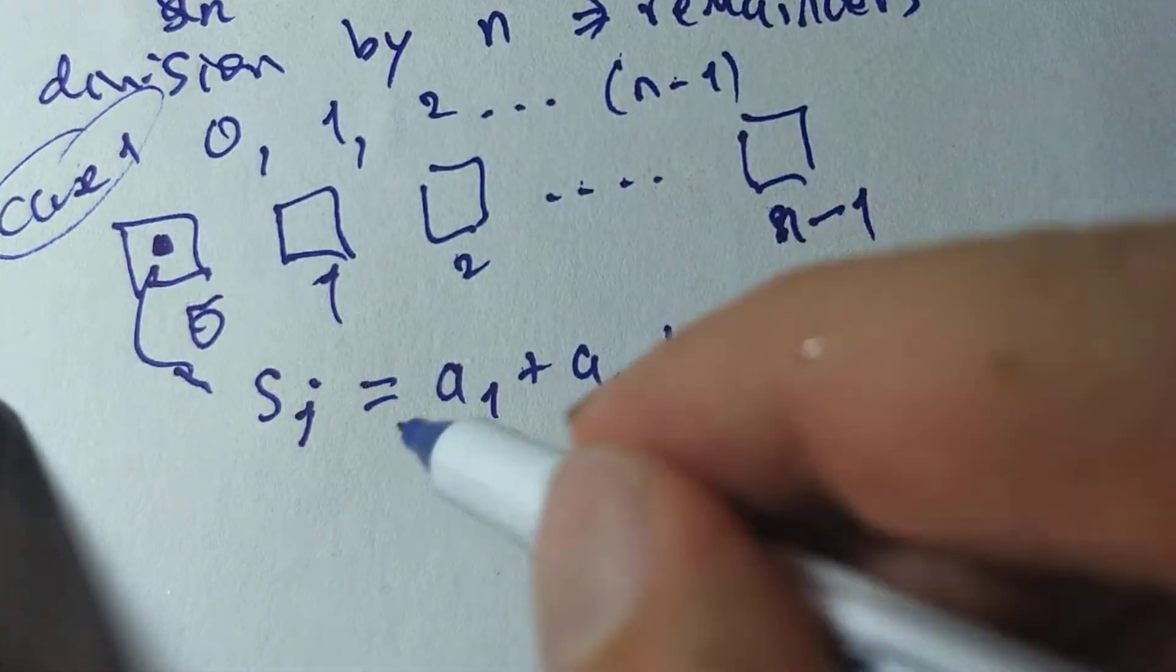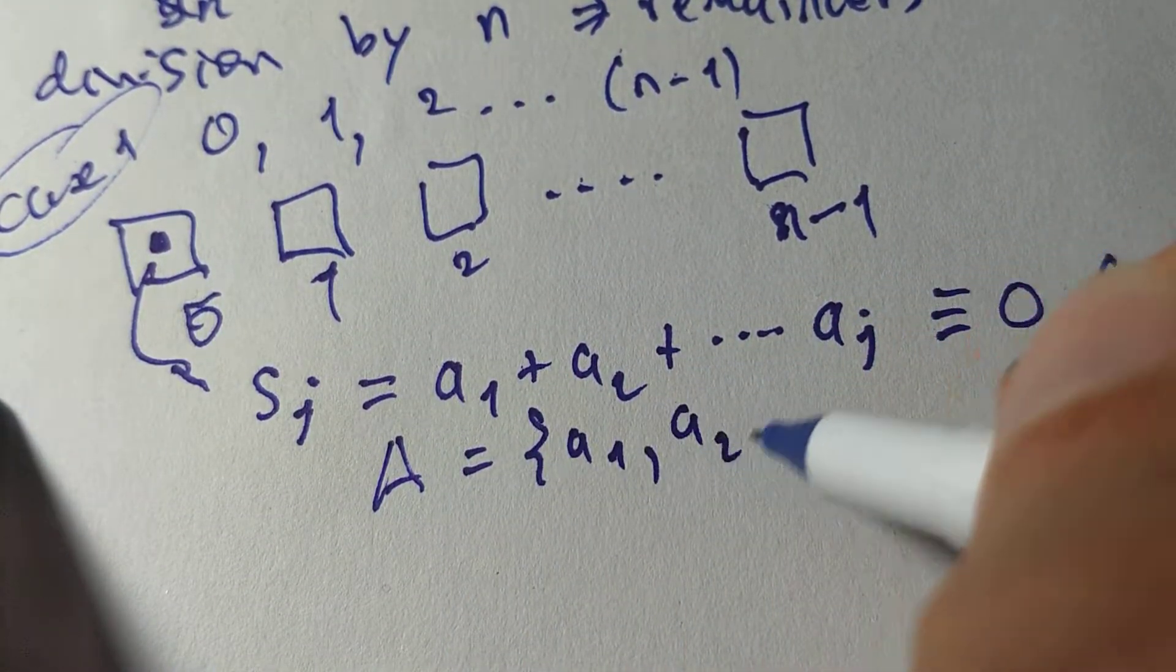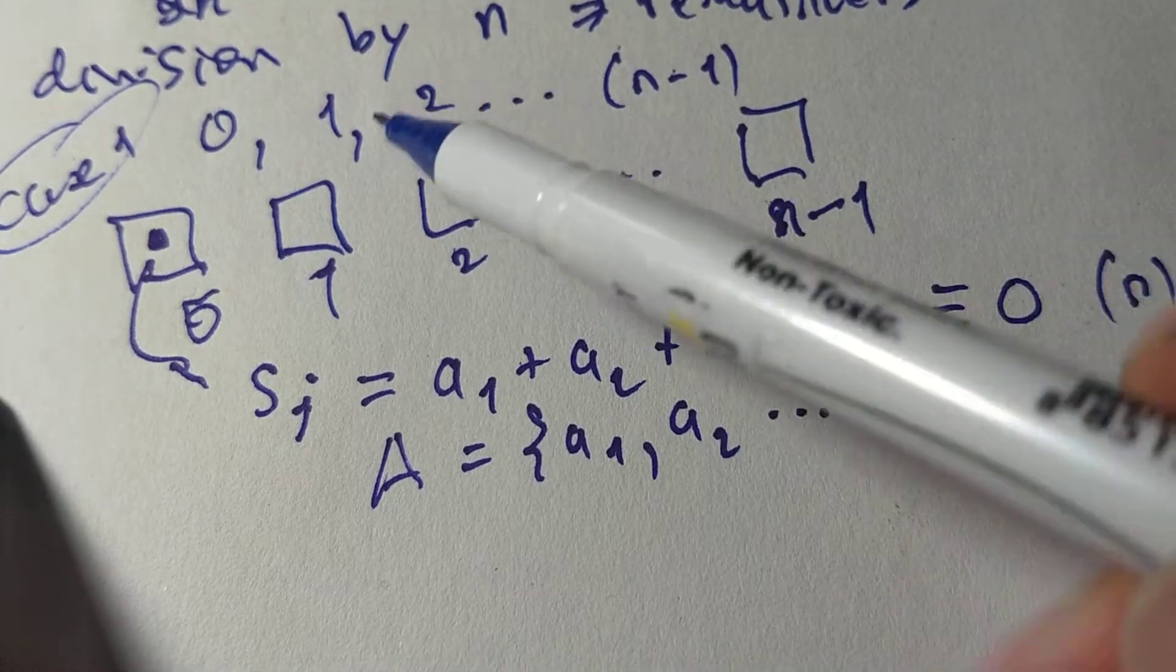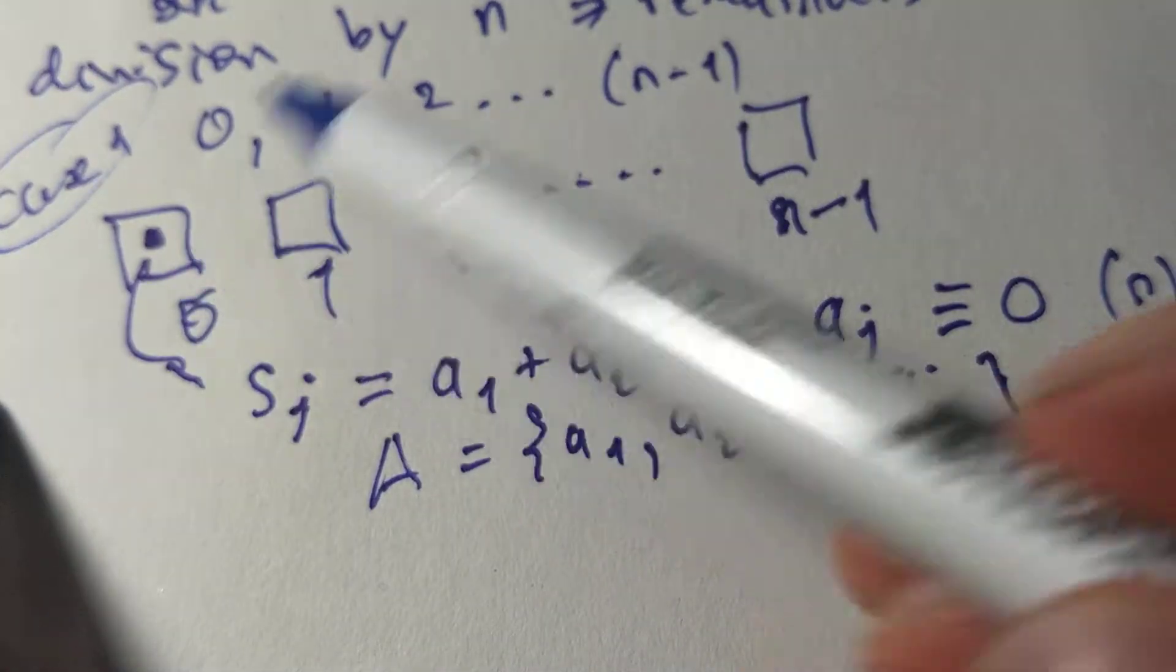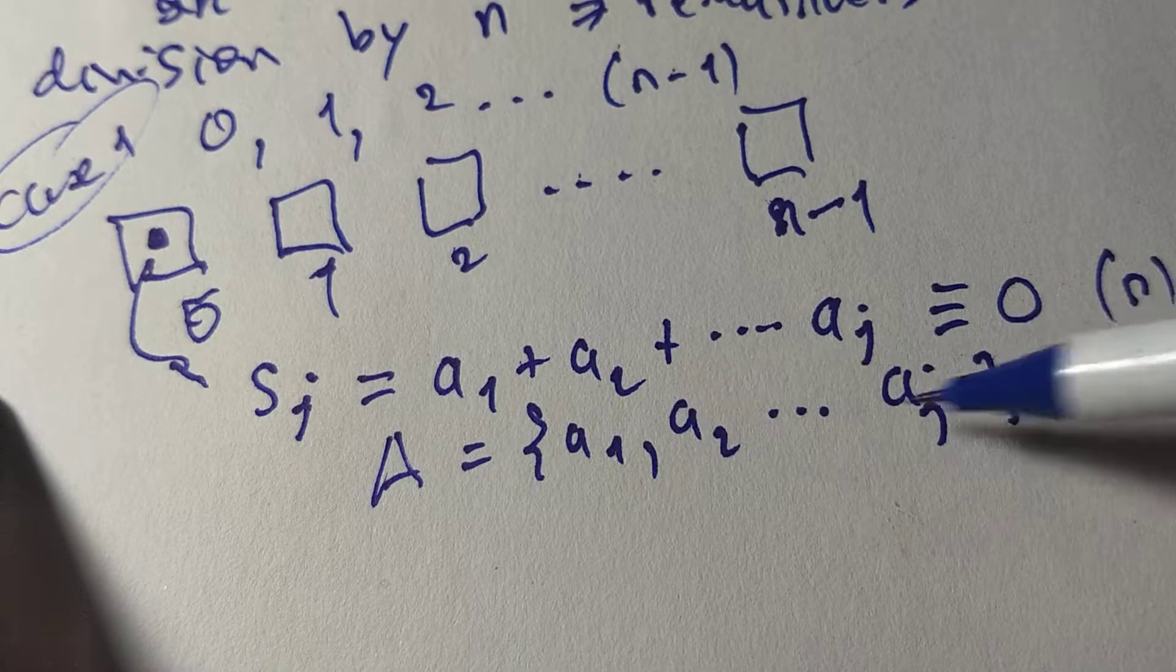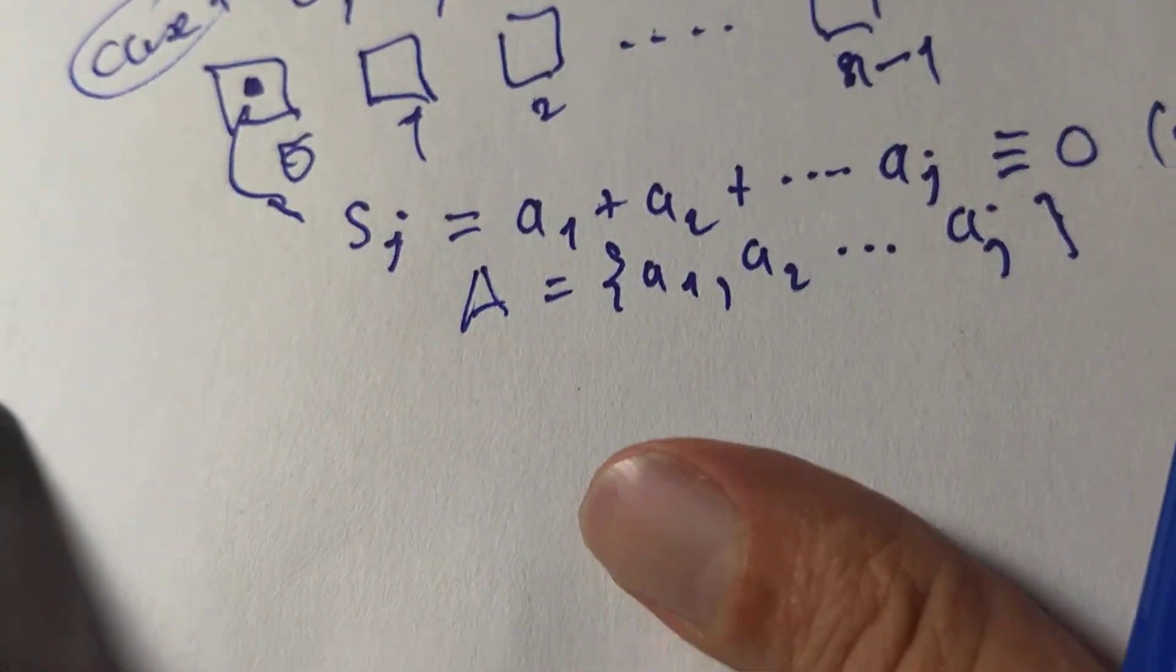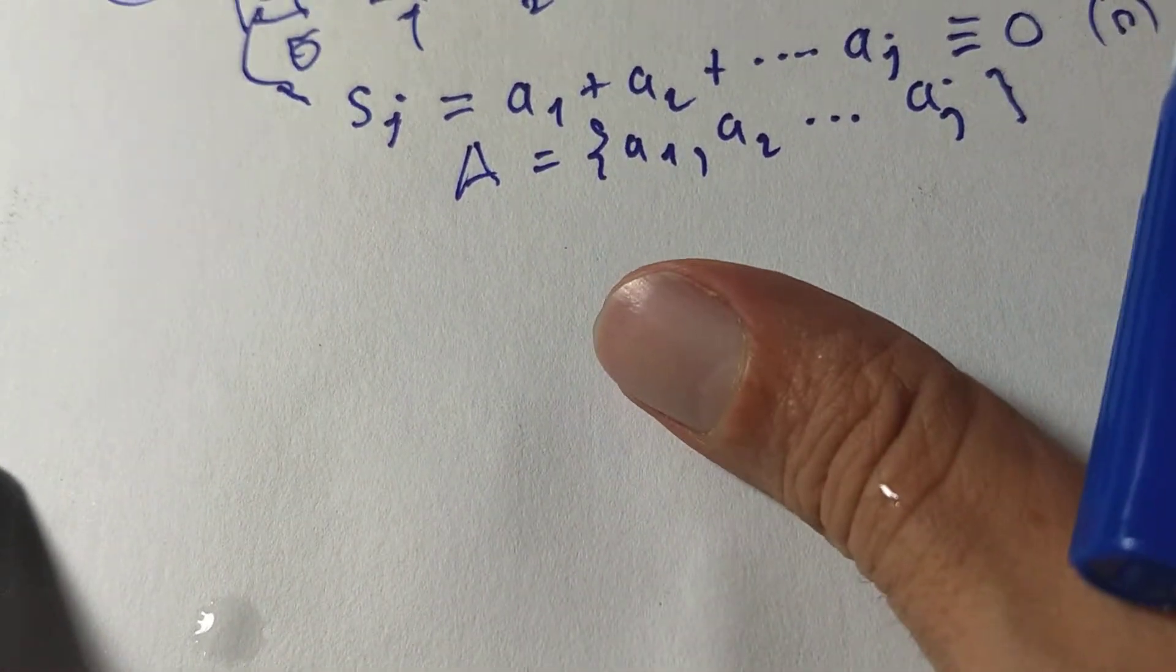So, this is my subset. My subset A is A1, A2, up to AJ. It exists. If I have an element in here, then I have my subset. That's it. This subset, sum of the elements, is divisible by N. Now, case 2 is I don't have anything in that little box.